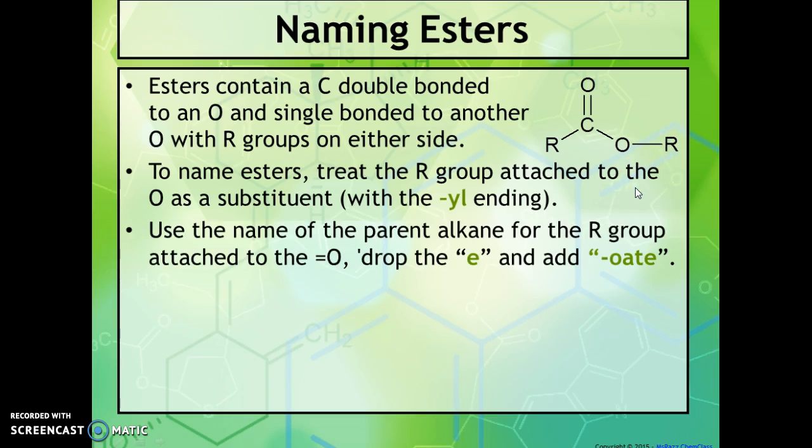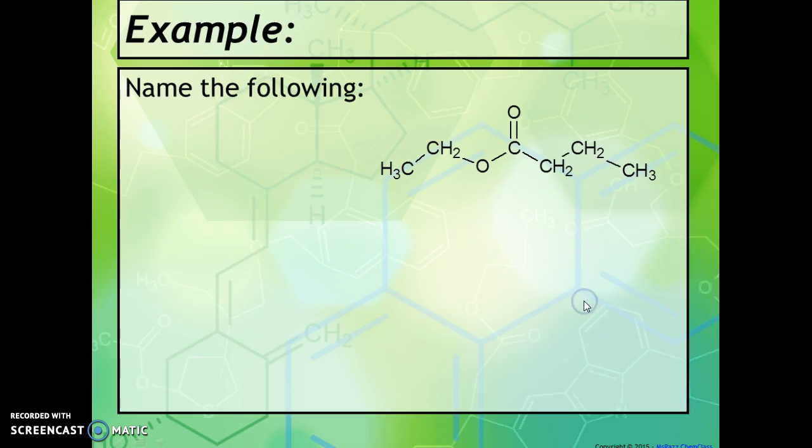So the name will be something-yl something-oate. So here's an example. Look at this nice long molecule. How long is it and where are the substituents?